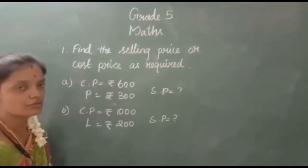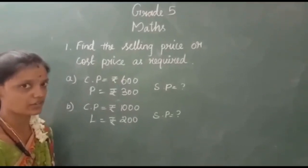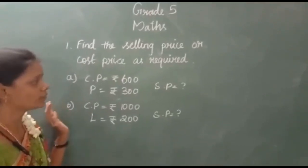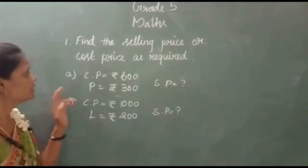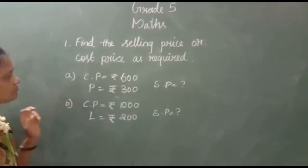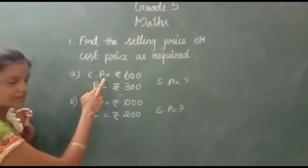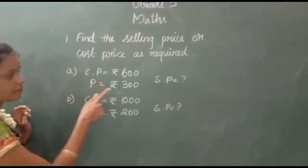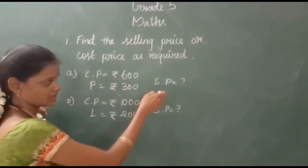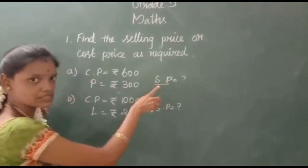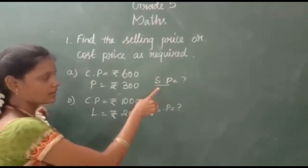Now you know what is cost price, selling price, profit and loss. Now we are going to do some exercises, let's see them one by one. Look at the first sum. CP means cost price. Cost price is given. P means profit, profit is given. Here we are going to find the selling price. SP means selling price. So how are we going to find the selling price? Let's see.